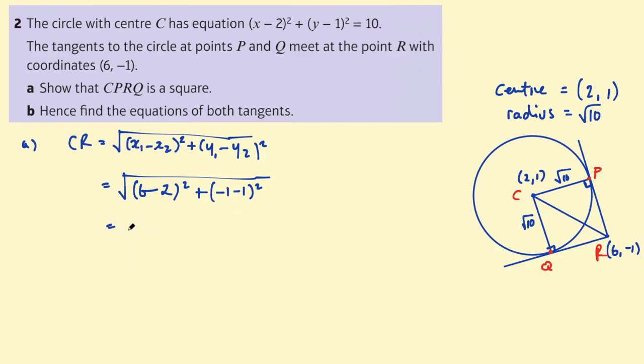And then this is √(4² + (-2)²). You get the same outcome whether you use -1-1 or think of it as -2 squared. Then this is 16 plus 4. That's √20. I'm not going to bother simplifying because we will end up squaring that at the end anyway. So we have that diagonal. That's √20.